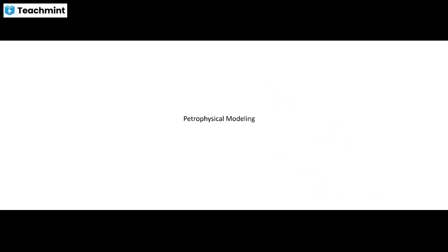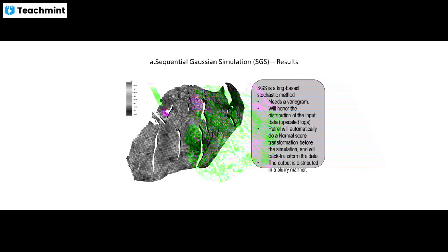Some more information on SGS — Sequential Gaussian Simulation. SGS is a kriging-based stochastic method that needs a variogram and honors the distribution of input data (upscaled logs). Petrel automatically performs normal score transformation before the simulation and then back-transforms the data, and the output is distributed accordingly.